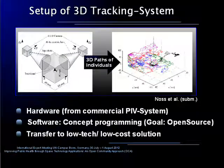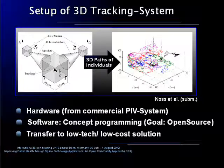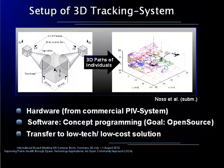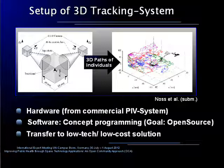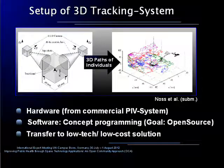We, however, set up our own system, which enables us to track the three-dimensional pathways of swimming zooplankton at a high temporal resolution. The hardware is based on a pre-existing commercial PIB system. Hence, with 4 megapixel, 12-bit cameras and telecentric lenses, it is somewhat over-equipped.